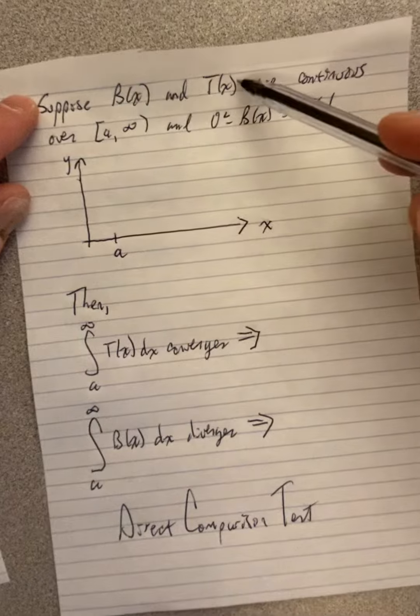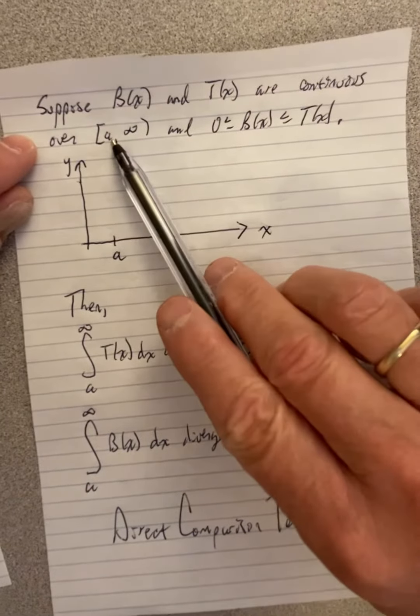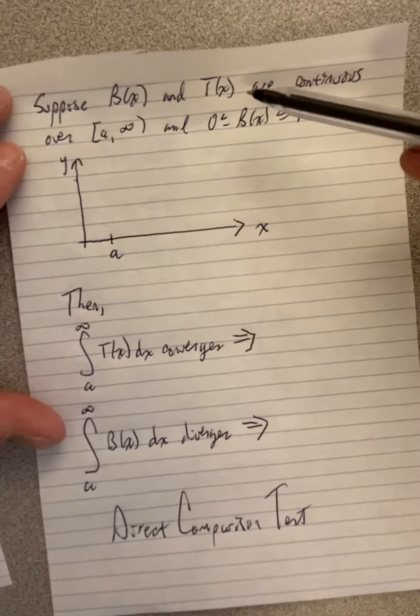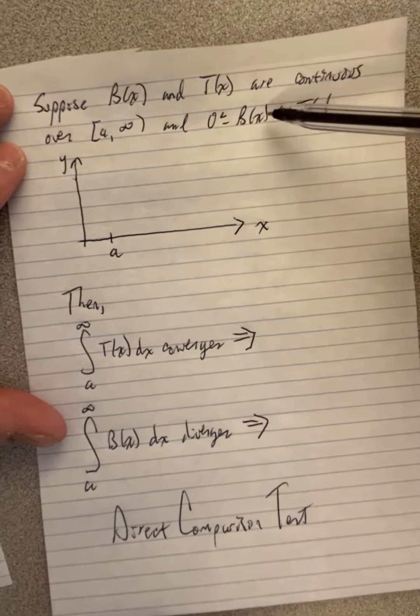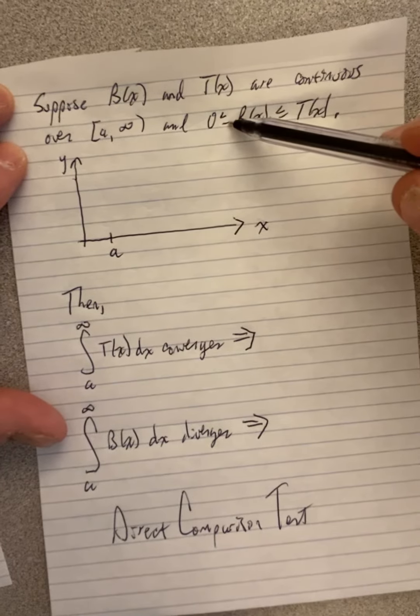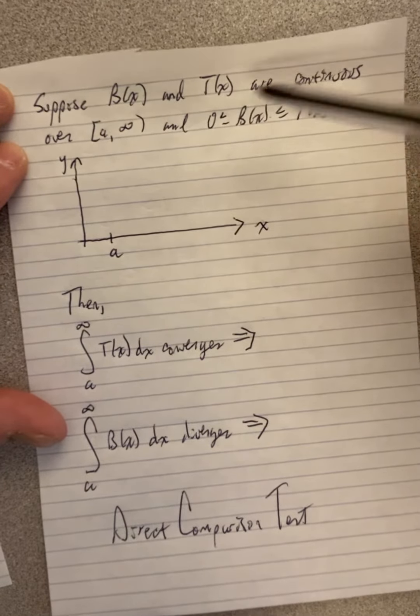Now, let's suppose we have two functions that are continuous over some interval A to infinity. And let's suppose further that one of the functions is always bigger than the other and that they're both always positive, or at least never negative. They're never negative.